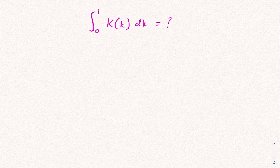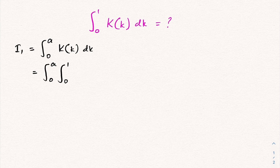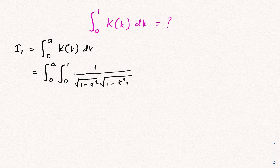Here K(k) is the complete elliptic integral of the first kind. I am going to take i1 equal to the integral from 0 to a of K(k) dk. We know K(k) equals the integral from 0 to 1 of 1 over the square root of (1 minus x squared) times the square root of (1 minus k squared x squared) dx.